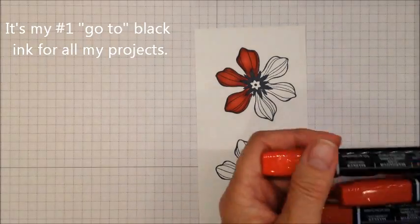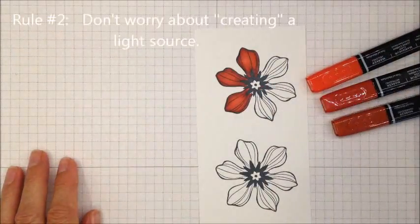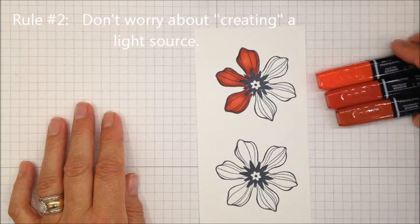Rule number two, oftentimes people will talk to you about creating a light source so that you have your shading going from light to dark. I want you to ignore all of that.